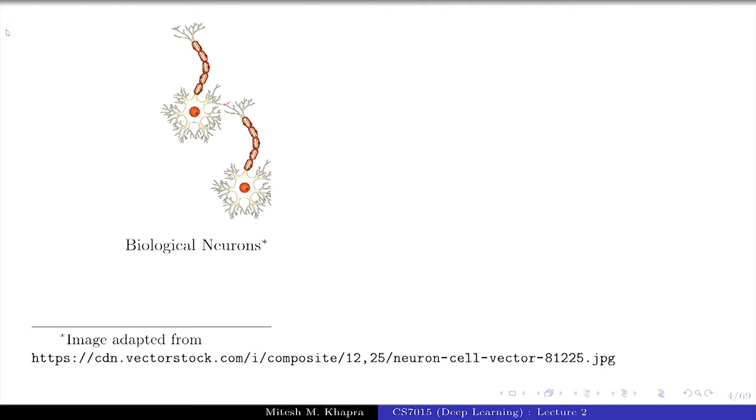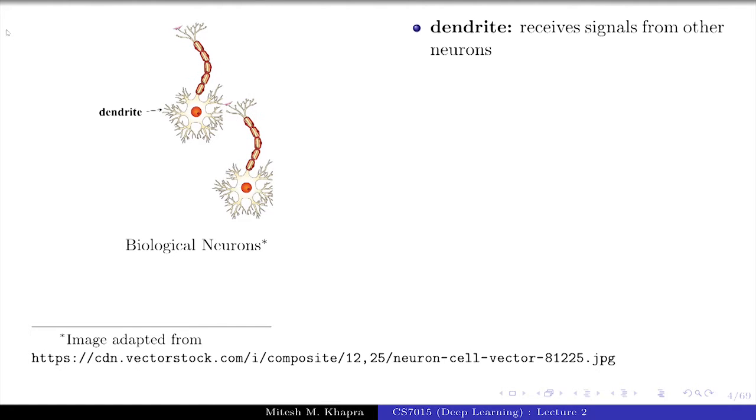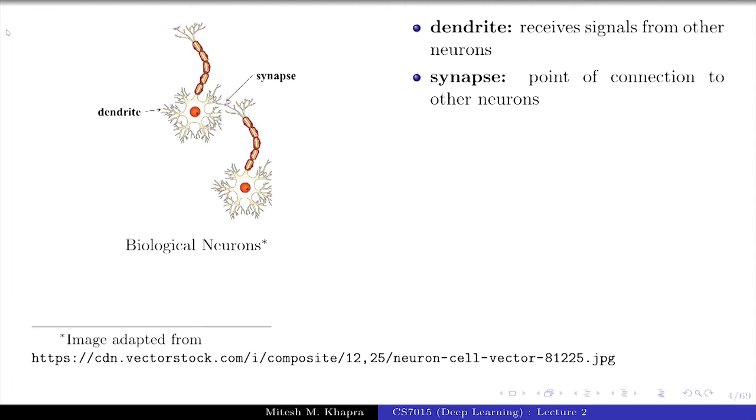This is what a typical biological neuron looks like. Here actually there are two neurons. This portion is called the dendrite. It is used to receive inputs from all the other neurons. That is the place where the input comes in. Then remember we said that in the 1950s we discovered that these neurons are actually discrete cells and there is something which connects them. That connection is called a synapse and it decides the strength of the connection between these two neurons.